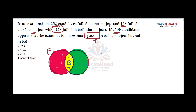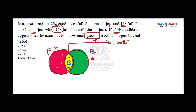To understand the question, we use a Venn diagram. P is one subject and Q is another subject. The common portion, shown in yellow and denoted B, represents the percentage of students who failed in both subjects.